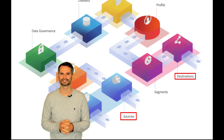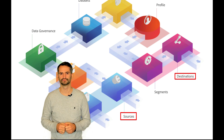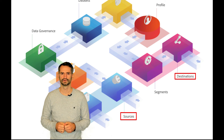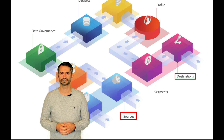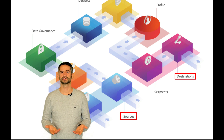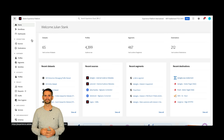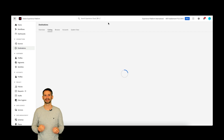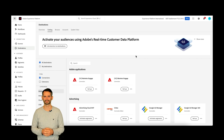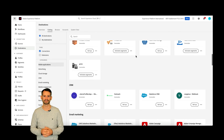Let's talk about destinations. Destinations are pre-built integrations with destination platforms that allow for the seamless activation of data from Adobe Experience Platform. You can use destinations to activate your known and unknown data for cross-channel marketing campaigns, email campaigns, targeted advertising and many other use cases. In Adobe Experience Platform, select Destinations from the left navigation bar to access the Destinations workspace. The catalog tab displays a list of all destinations available in Platform that you can send data to.